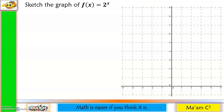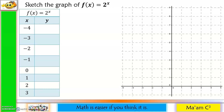Let us start with f(x) = 2 raised to x. We will create a table of values, assigning values for x including negative numbers, 0, and positive numbers. To compute the resulting values of y, all we have to do is substitute each value of x in the function.